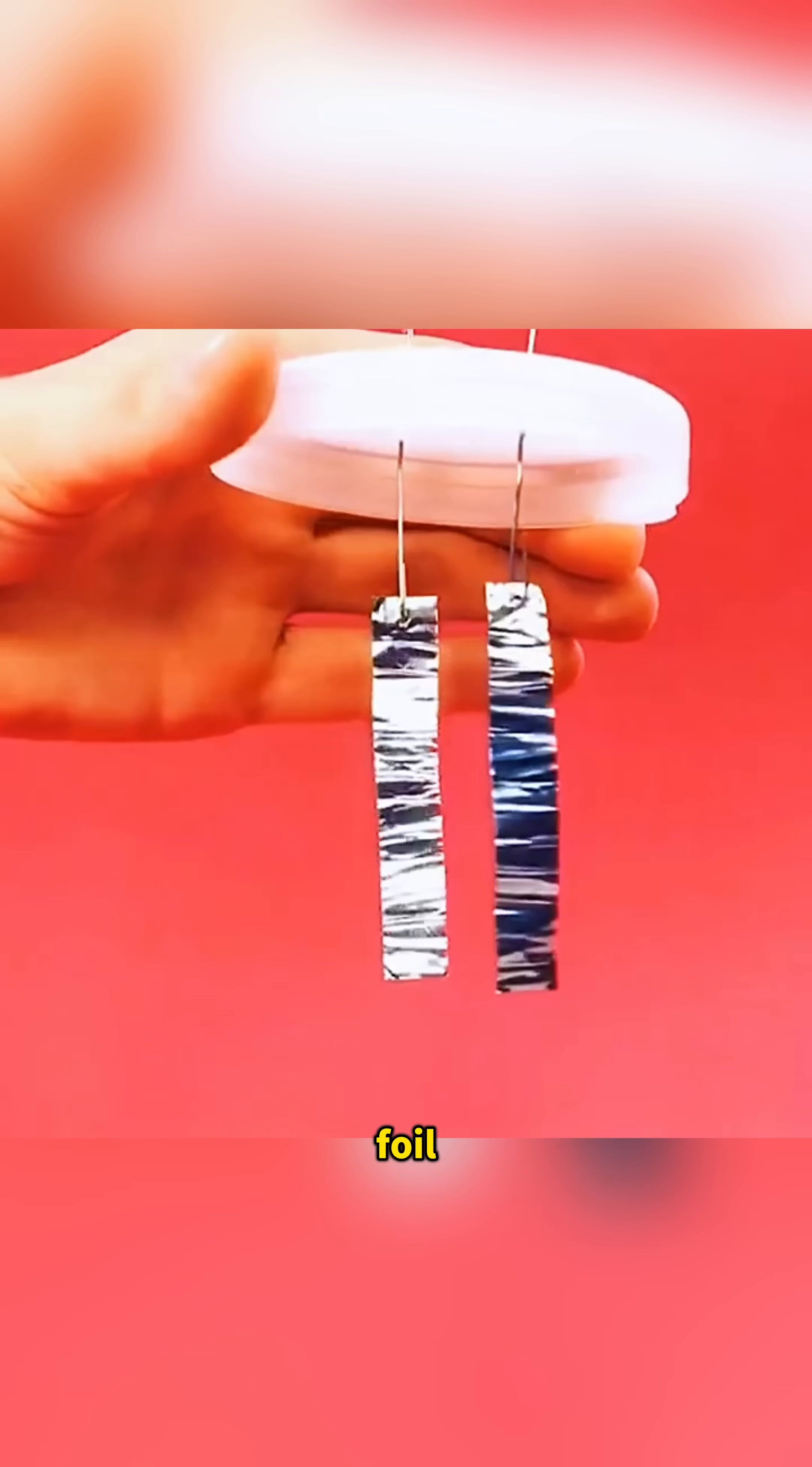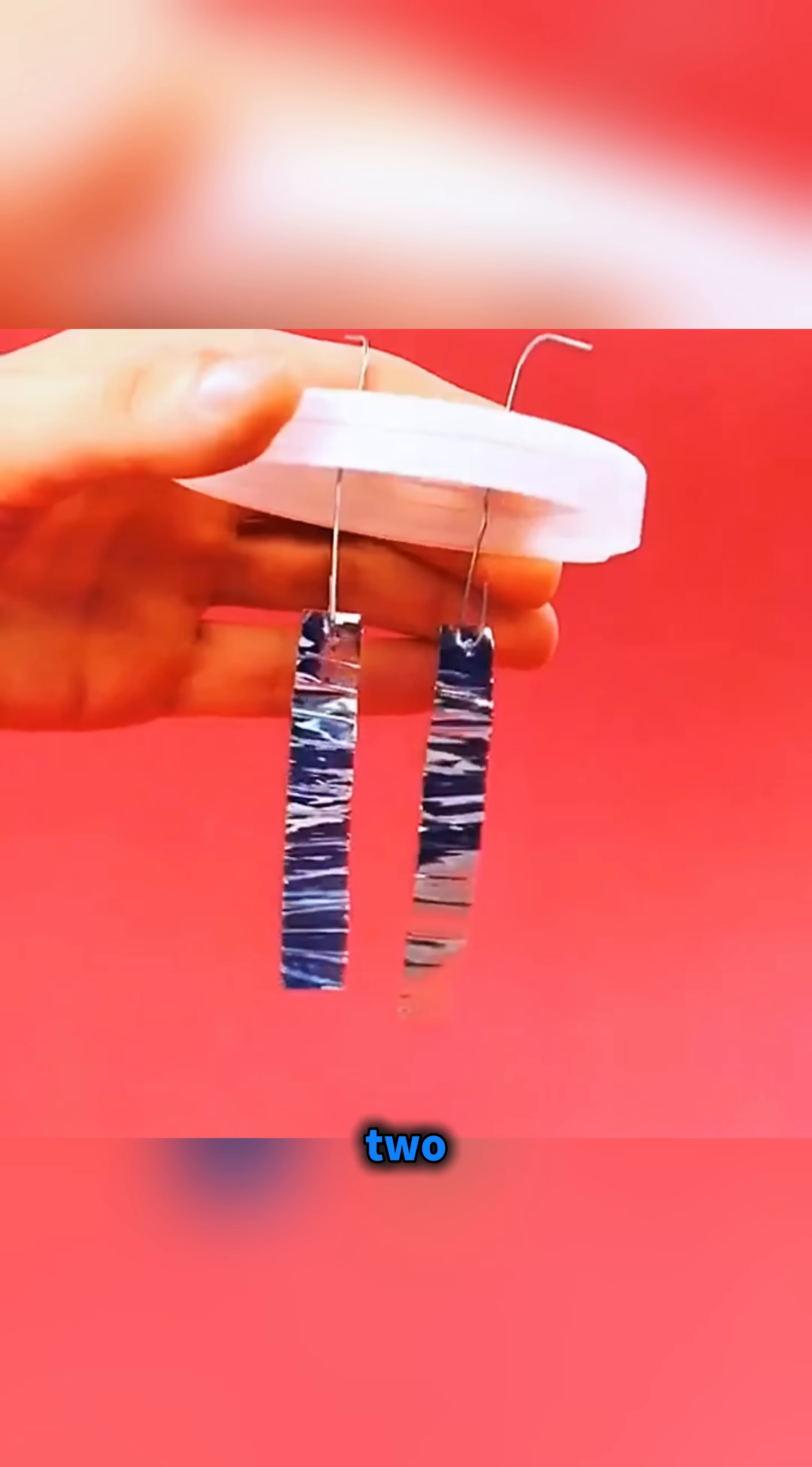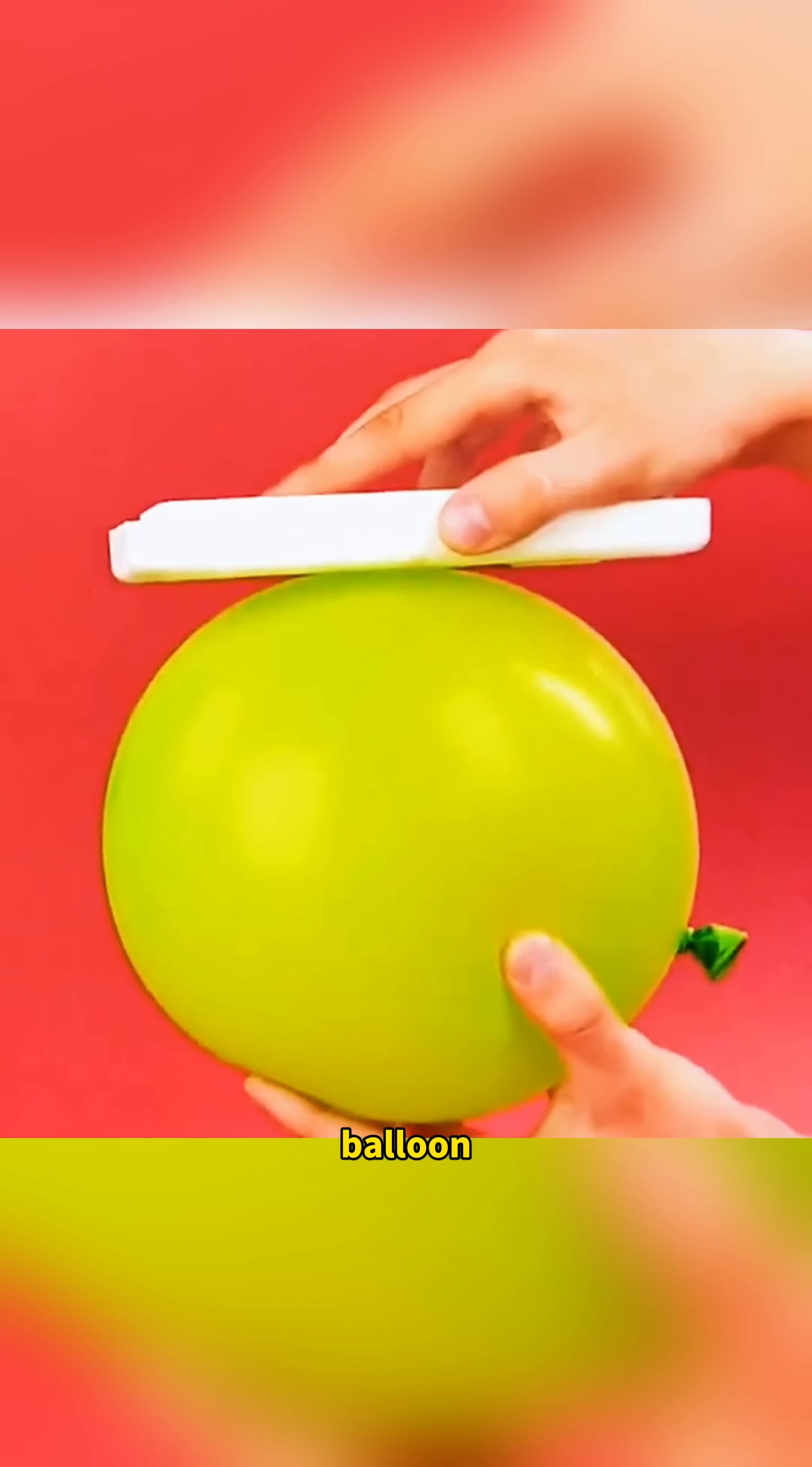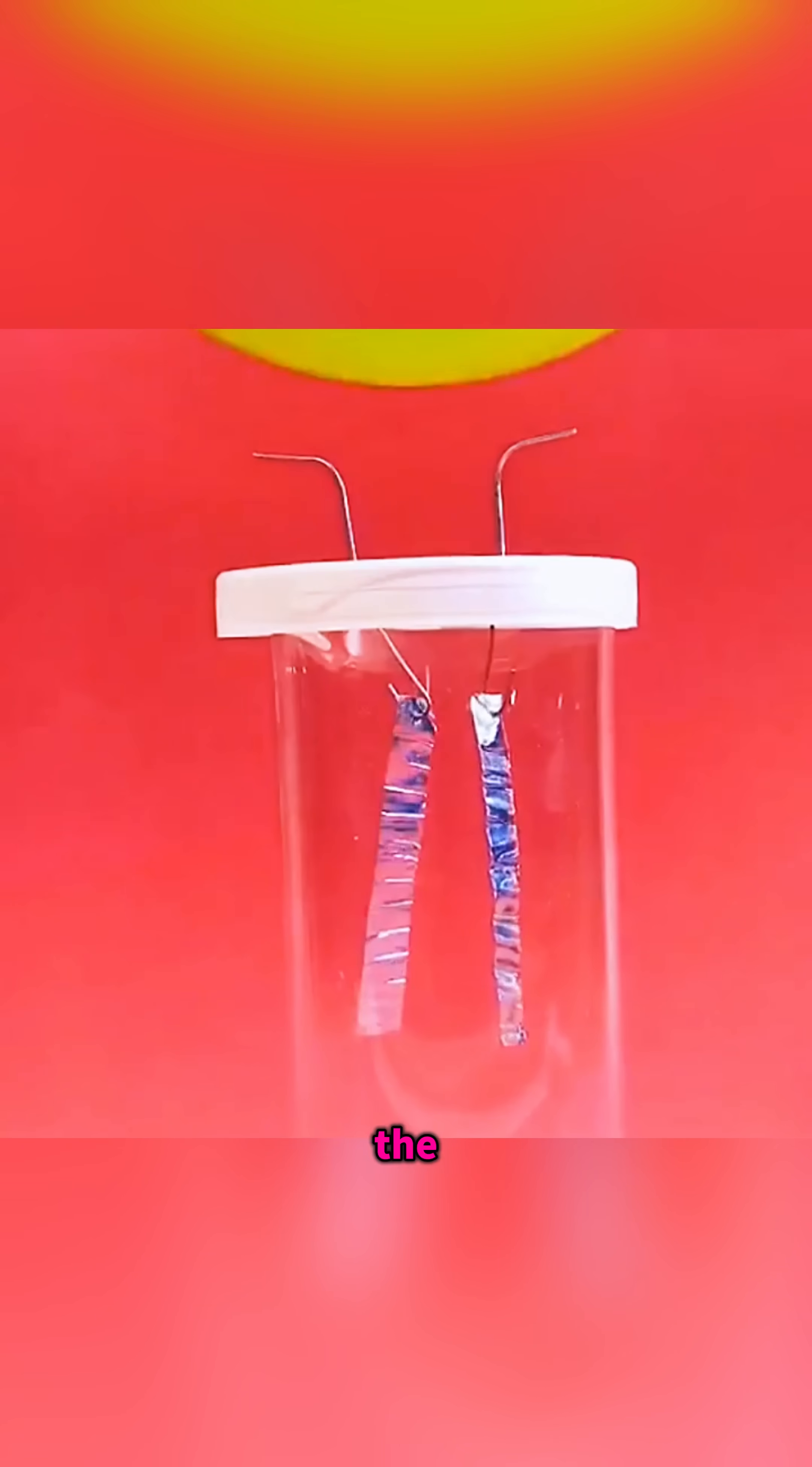Hang two small pieces of aluminum foil from a plastic bottle cap using two iron wires and place it over a cup. Rub a foam board and a balloon together, bring the balloon close to the wires and, under the same electric charge, the aluminum foils repel each other.